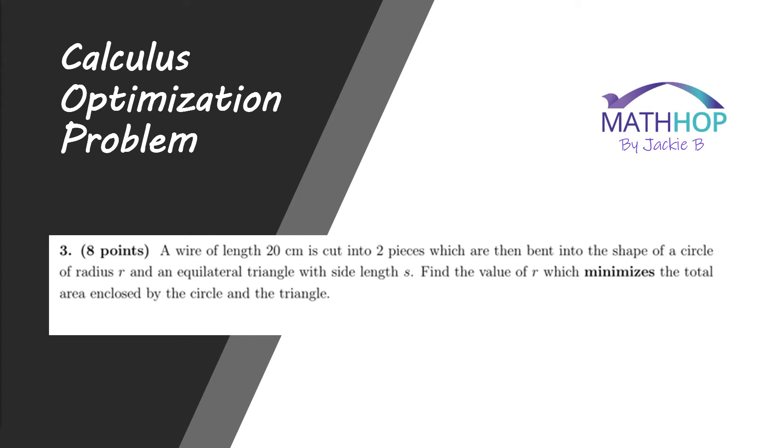Well hello there to everyone still remote learning at home. The problem that comes in today is pretty interesting. It is a calculus optimization problem and it's one I've never seen exactly like this before. It involves a wire that's 20 centimeters long. We cut it into two pieces. We don't know anything about the size of the two pieces. All we know is that one piece is going to be bent into the shape of a circle and the other into an equilateral triangle. And then we are going to minimize the total area created by the two shapes. So let's get started.